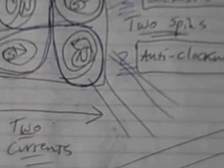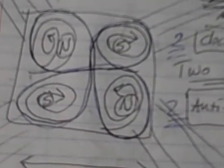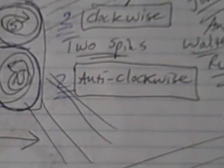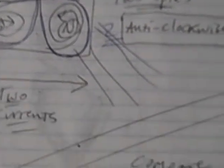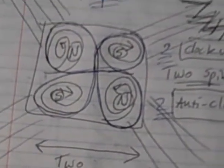here's this first drawing which shows, which is based on Howard Johnson's drawings or mapping of magnetic spins and currents. And what you have is, you have basically two clockwise spins and two anti-clockwise spins. And you also have two currents.